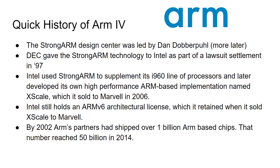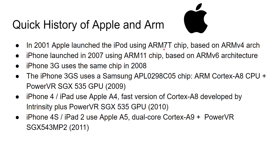Apple and ARM have a long relationship. In 2001, Apple launched the iPod using an ARM7T chip — so from ARM1 to ARM2, this is the ARM7, and by then the ARM architecture had gone through to its fourth variation. Then the iPhone was launched in 2007 using an ARM11 chip, which was very popular in mobile phones at the time — based on the ARMv6 architecture, which is still used today in the Raspberry Pi Zero. The iPhone 3G used the same chip in 2008. Then the iPhone 3GS used a Samsung chip based on the Cortex-A8 from ARM, plus the PowerVR GPU from Imagination.